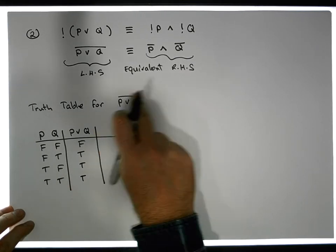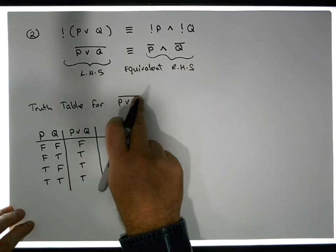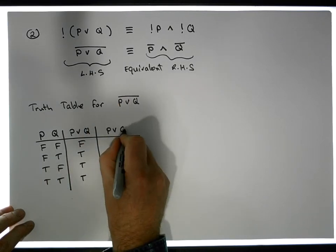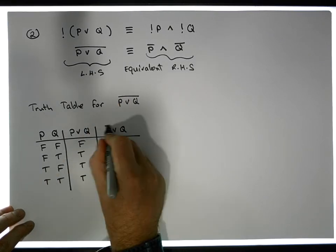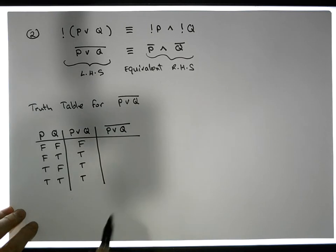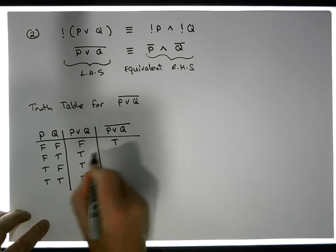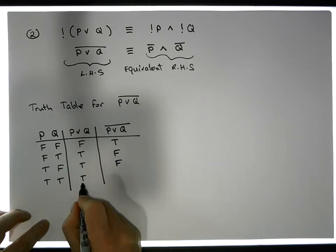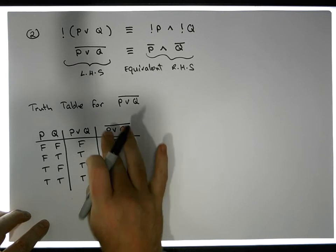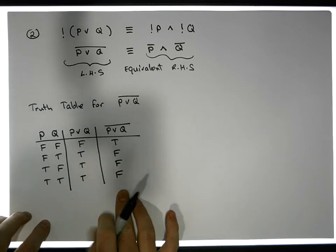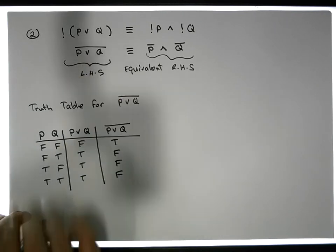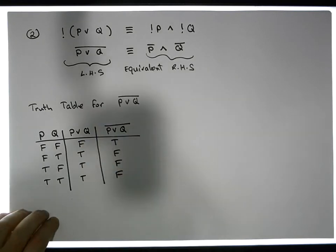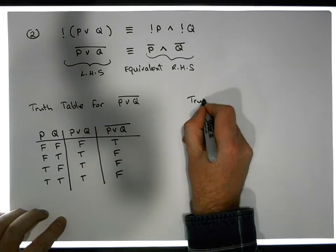Now we can evaluate the negation. We take the p-or-q column and negate it: false goes to true, and trues go to false. So this gives us the evaluation of the left-hand side of this propositional statement.